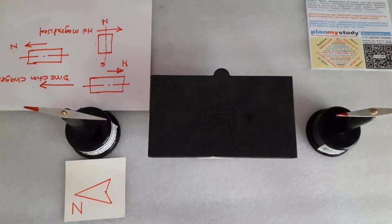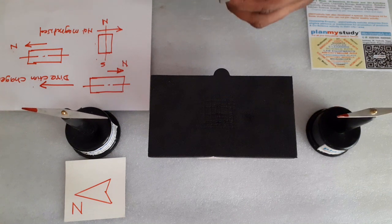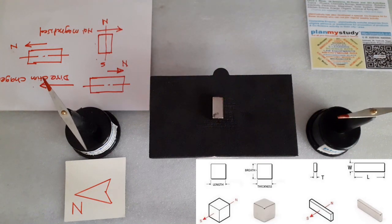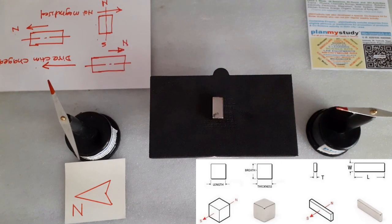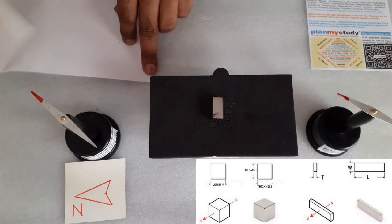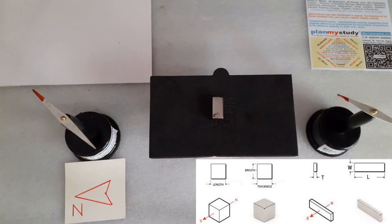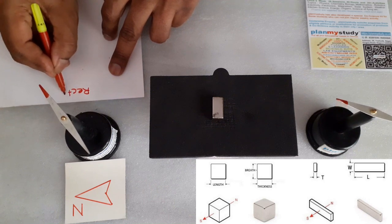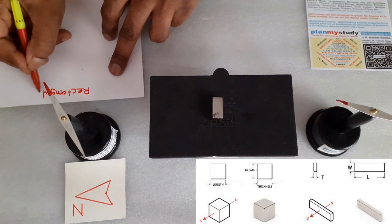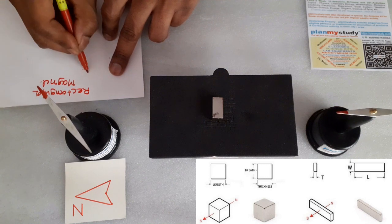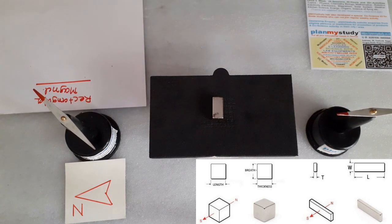Now, I have taken another type of magnet. Here we have to identify which is the north pole of the magnet, which is the south pole of the magnet, and how it is magnetized, axially or radially.